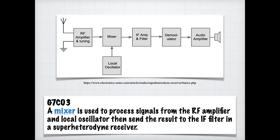Back to our block diagram, you can see that the local oscillator, which generates a particular frequency, and the RF amplifier and tuning are combined into a mixer and then passed along to the IF amplifier and filter. For the exam, you need to know that a mixer is used to process signals from the RF amplifier and local oscillator, then send the result to the IF filter in the super heterodyne receiver.